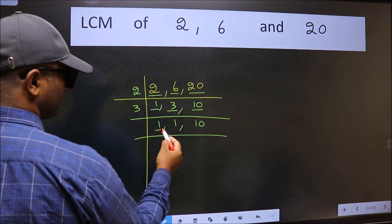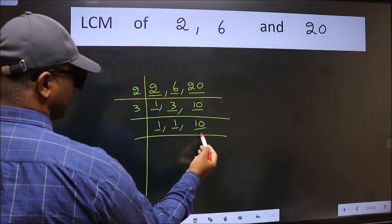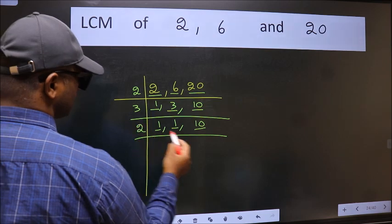Now we got 1 here and here. So focus on the next number 10. 10 is 2, 5 is 10.